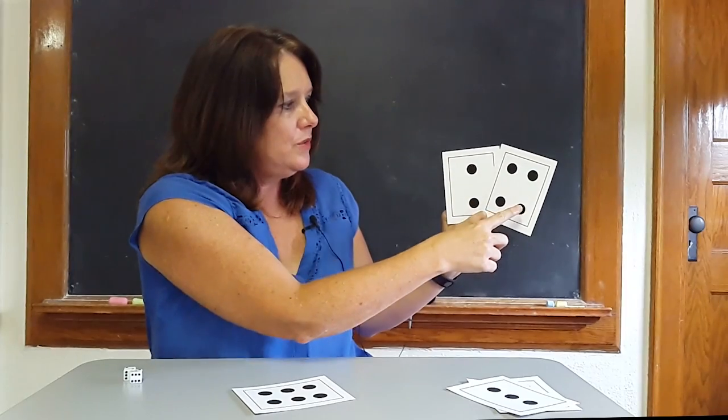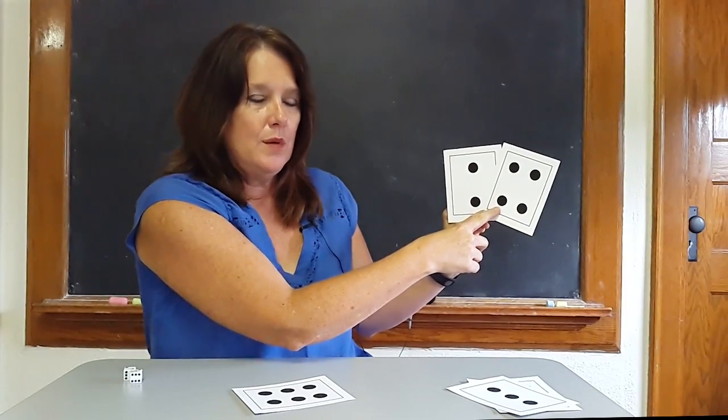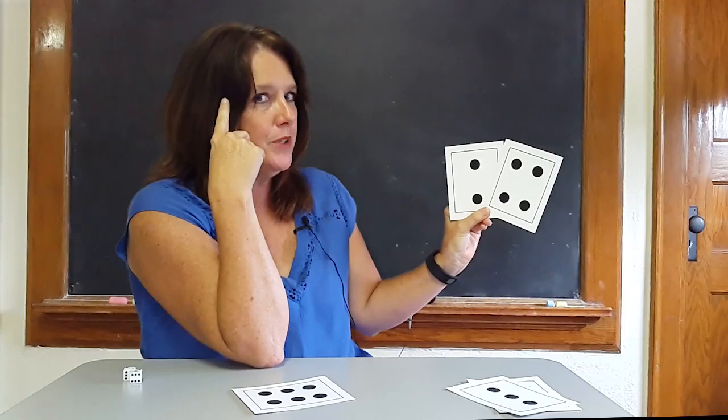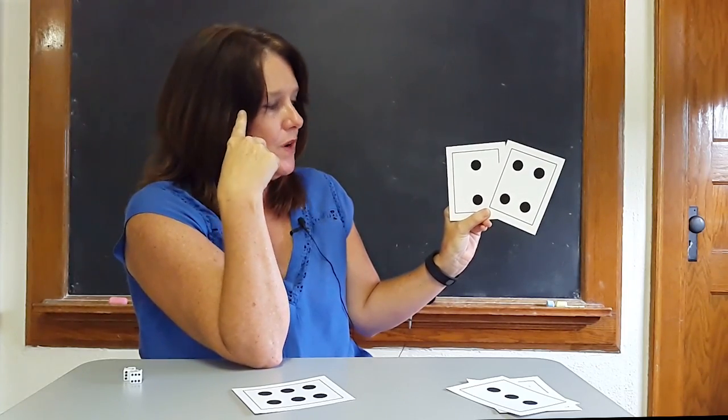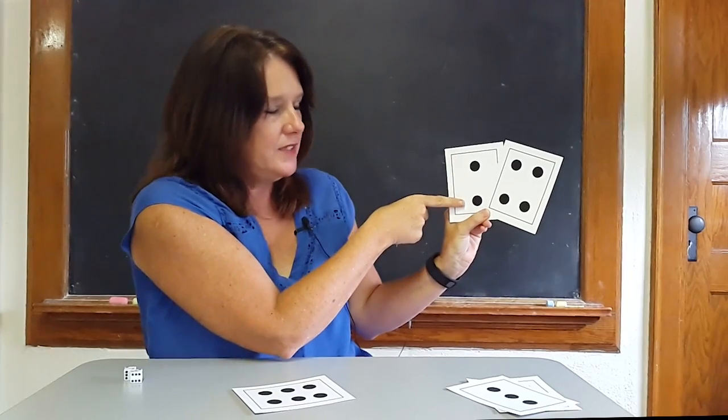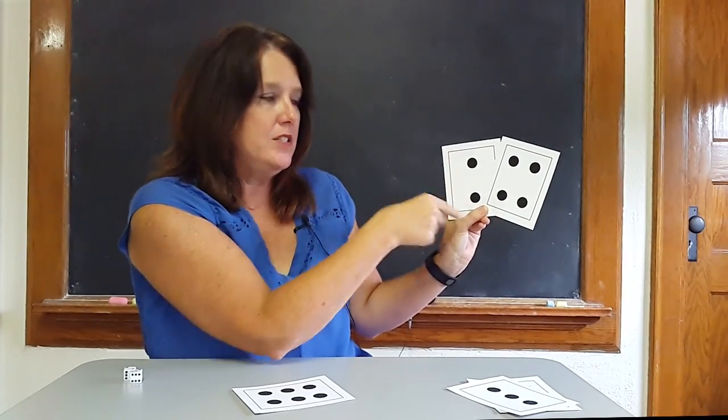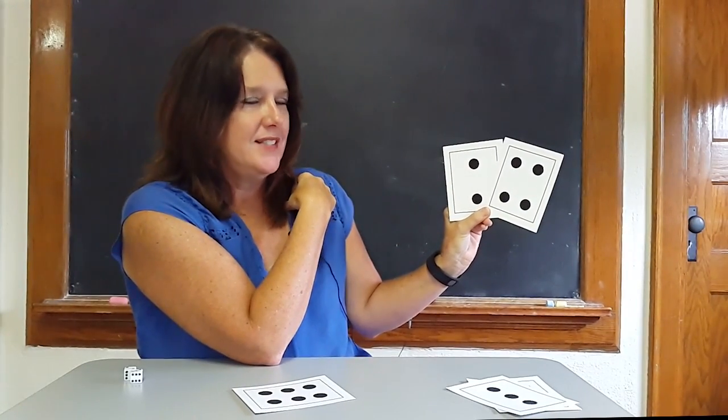One, two, three, four. I'm going to put these dots in my head. Four. Remember, don't lose it. What's in your head? Four. And I'm going to start with four and count on: five, six. How many dots are on both cards, boys and girls? Six.